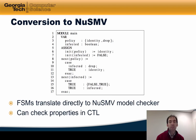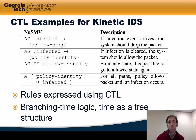An advantage to Kinetic is that the policies we've defined can easily translate to the language of a model checker called NuSMV. The model checker allows us to check properties that are specified in a language called CTL, or Computation Tree Logic. Here are some example assertions expressed in CTL. For example, we can say that if an infection event arrives, the system should eventually drop the packet. The modifier A suggests that this policy always holds, and the modifier G indicates that this policy should hold for any execution path.